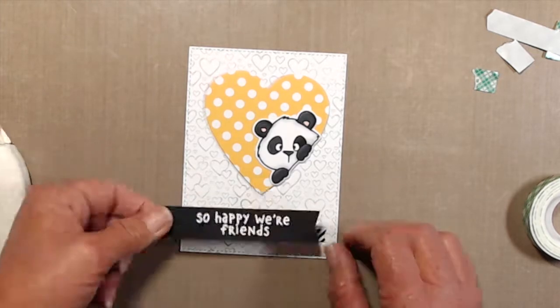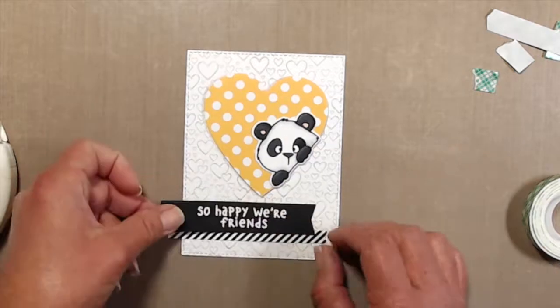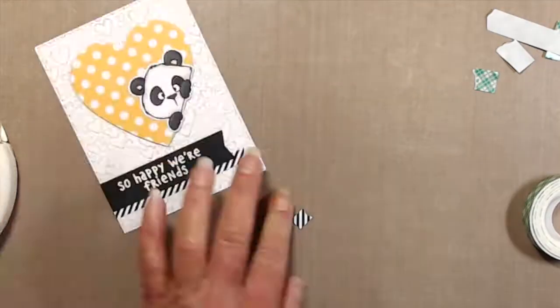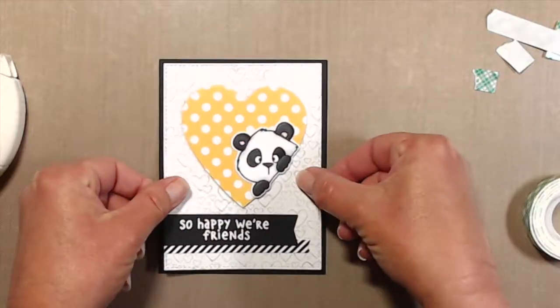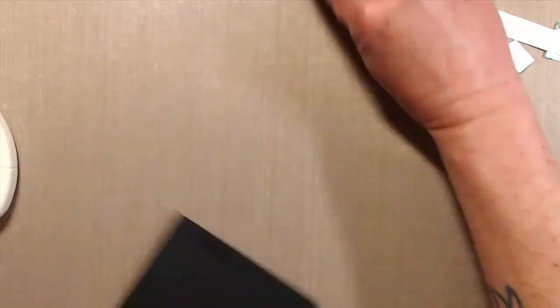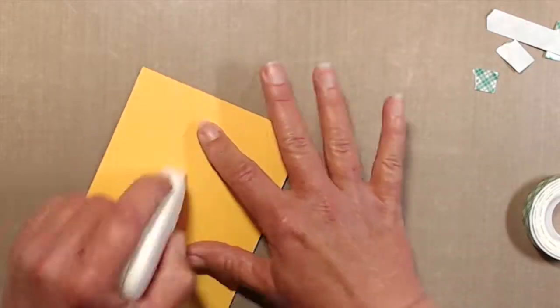Trimmed off the excess, added that to a piece of black cardstock. Then added that to a piece of yellow cardstock. And then finally to the front of a top-folding white note card.